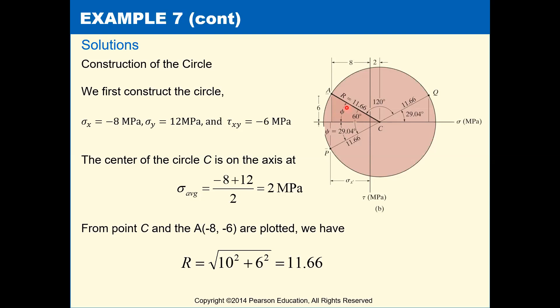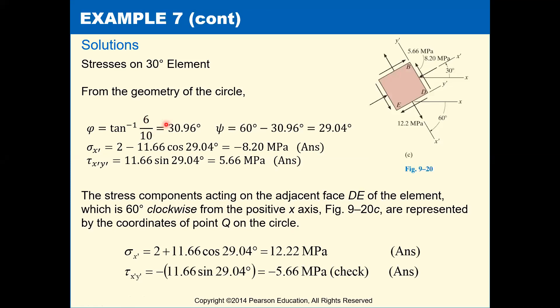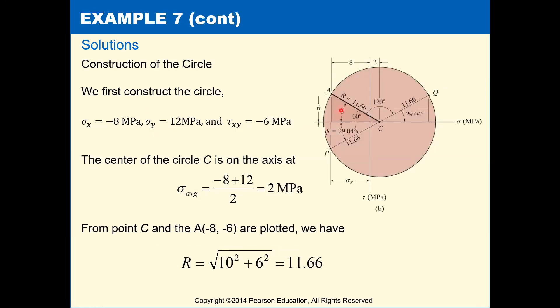So the first thing you have to do is find what this angle is here. They call it phi. And you can just find that from your inverse tangent of 6 over 10. So they do that here, and you find that that angle is 30.96 degrees. Okay, so phi is 30.96, which means the rest of this angle to take us to the point that we want to find our state of stress at is going to be 29.04 degrees. We subtract it from 60.